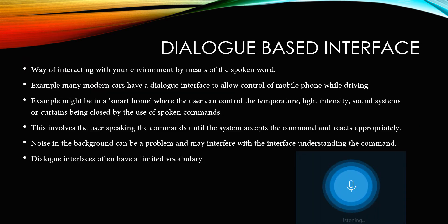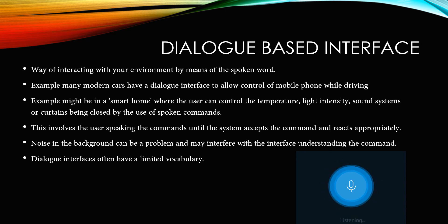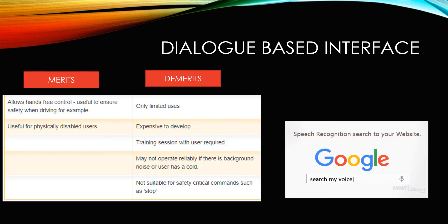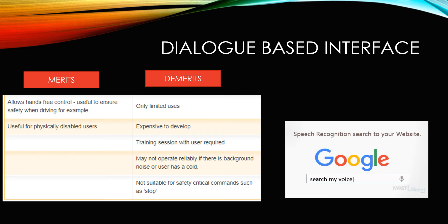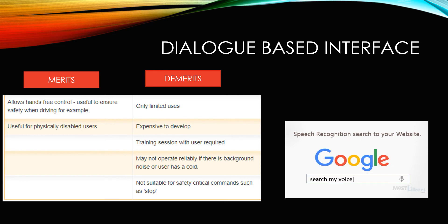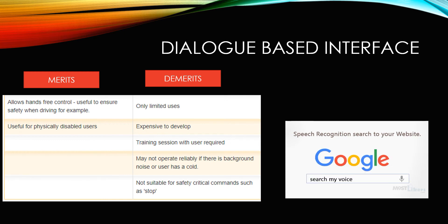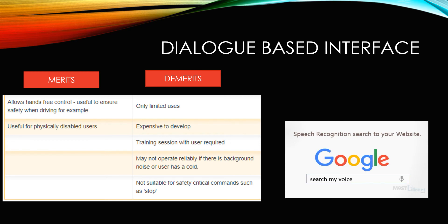Next, dialogue-based interfaces. This type of interface allows you to take input via spoken word. Examples include use in cars or smart homes, where you give commands using spoken words. Advantages: it allows hands-free control, so it is also useful for physically disabled users. Disadvantages: only limited users can use this interface; it is expensive to develop; a training session is required because it accepts only a few types of commands, and it must be in a position to listen before you give your input.